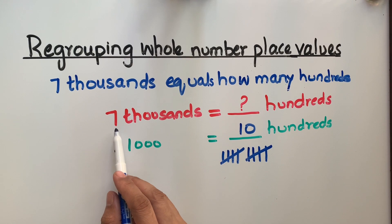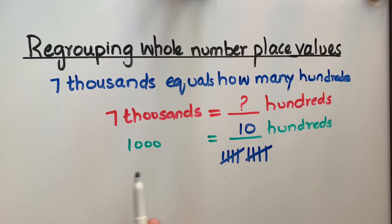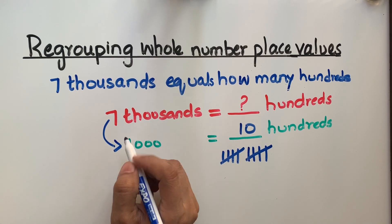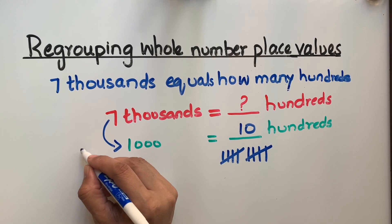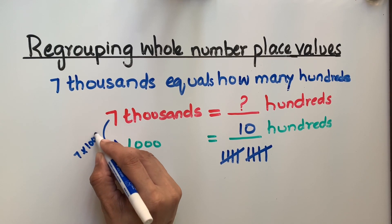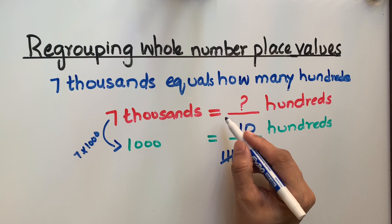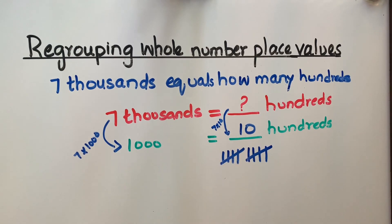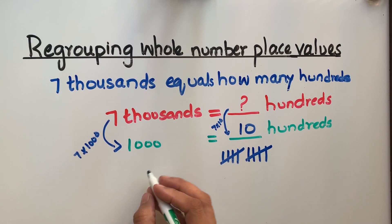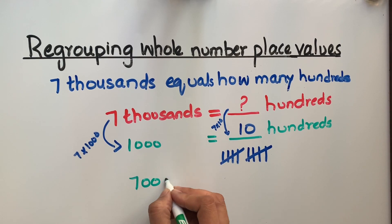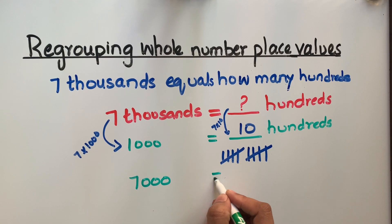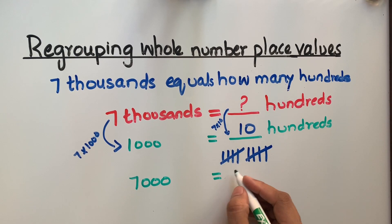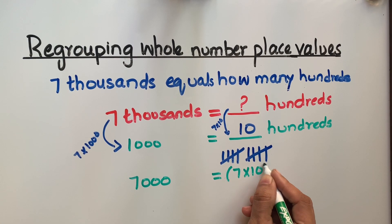But we want to know about seven thousand equals how many hundreds. One thousand equals ten hundreds, but here we want to know about seven thousand. So let's multiply one thousand by seven. Seven times one thousand equals seven thousand. And the same thing we'll do on the right side of the equation: seven times ten. So seven thousand equals seven times ten, which is seventy hundreds.